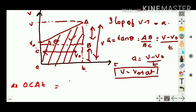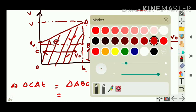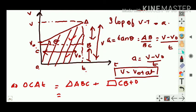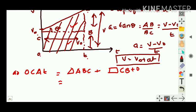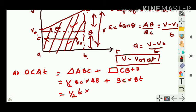We calculate the area of the shape OCAT. There are two parts: a triangle ABC plus a rectangle CBTO. Area of triangle = ½ × base × height = ½ × BC × AB. Area of rectangle = BC × BT. Substituting: BC = t, AB = v - v₀, BT = v₀.